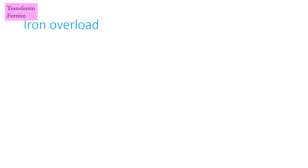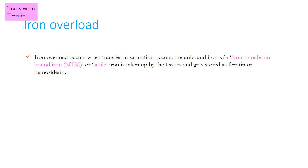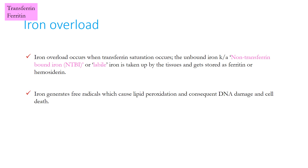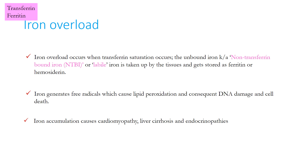Iron binding proteins are of two types: transferrin, which binds iron in circulation, and ferritin and haemosiderin, which bind stored iron. Iron overload occurs when transferrin saturation occurs; the unbound non-transferrin-bound iron or labile iron is taken up by tissues depending on the number of calcium channels, making cardiac myocytes very susceptible. Iron is stored as ferritin or haemosiderin in tissues and generates reactive oxygen species and hydroxyl radicals, causing lipid peroxidation, DNA damage, and cell death. Iron accumulation leads to cardiomyopathy, liver cirrhosis, and endocrinopathies including hypopituitarism, hypogonadism, hypothyroidism, diabetes, osteopenia, short stature, osteoporosis, and infertility.